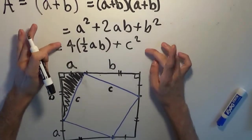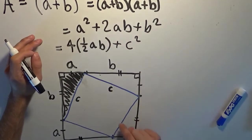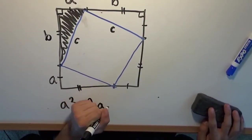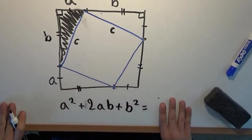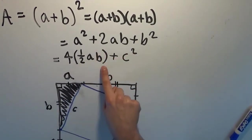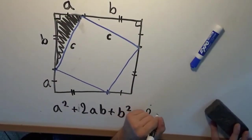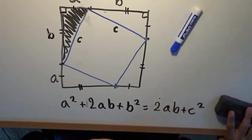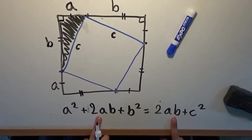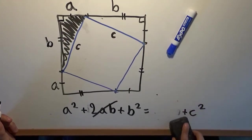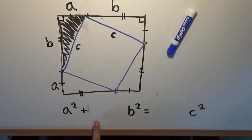I know these two expressions have to be equal because they both represent the area of this square. So: A squared plus 2AB plus B squared equals four times one-half times AB plus C squared. Four times one-half is two, so this simplifies to 2AB plus C squared. Since 2AB is being added to both sides of the equation, we simply subtract it from both sides. And we're left with: A squared plus B squared equals C squared. The Pythagorean Theorem. It is proven.